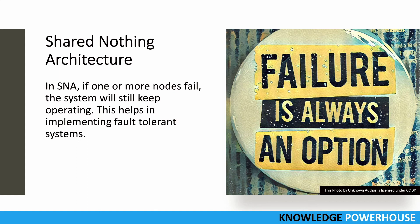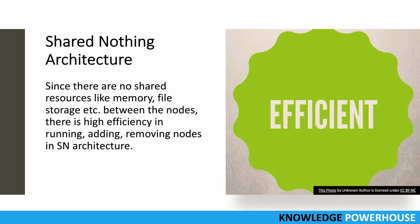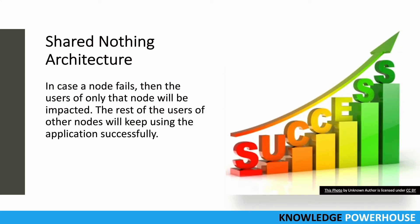Since there are no shared resources like memory or file storage between the nodes, there is high efficiency in adding or removing nodes in SNA. This helps in running the system for a much longer duration. If a node fails, only the users of that specific node are impacted — out of thousands of nodes, only those users are affected while the rest keep using the application successfully. That's one of the biggest benefits of Share Nothing Architecture alongside efficiency, fault tolerance, and high availability.